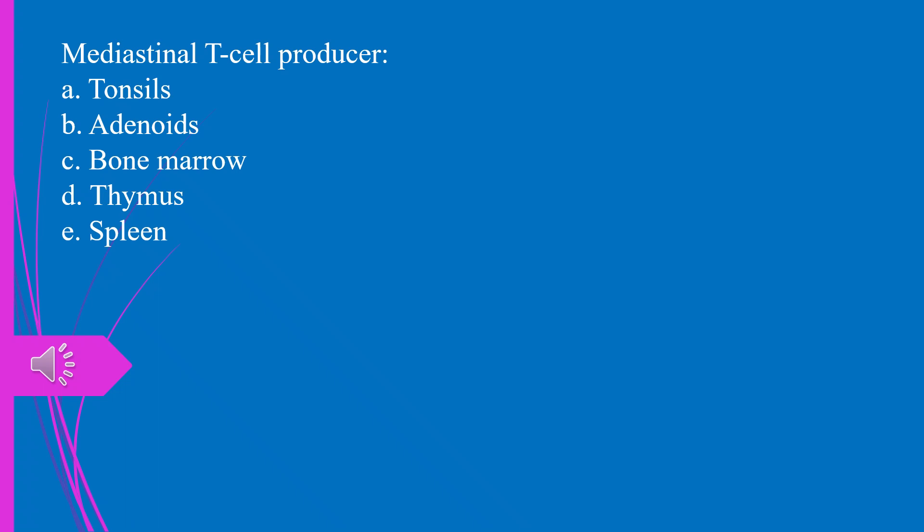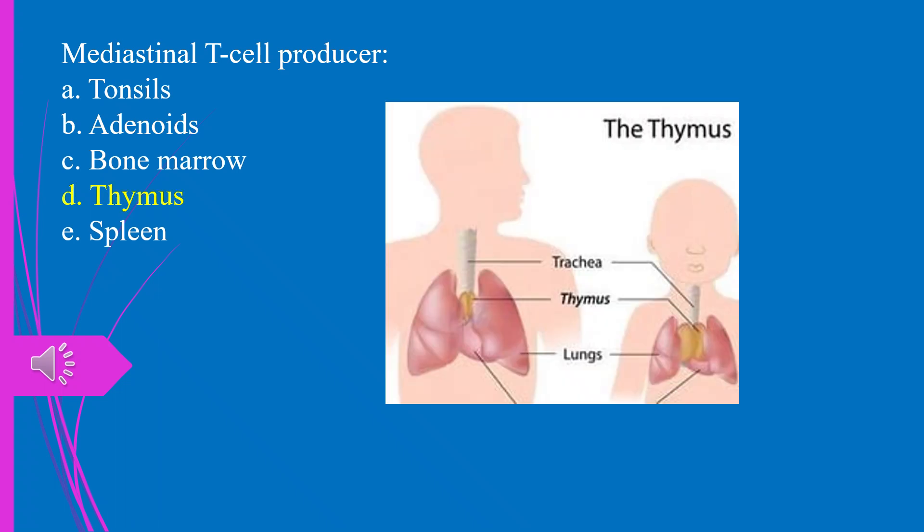Question 3. Mediastinal T-cell producer: a) tonsils, b) adenoids, c) bone marrow, d) thymus, e) spleen. The answer is d, thymus.